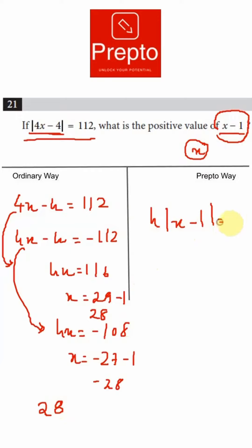Once I remove it, I get 4 times x minus 1 is equal to 112, which means modulus of x minus 1, which is the positive value, is 28. You can see, very quickly, just two lines and you have your answer using the Prepto way.